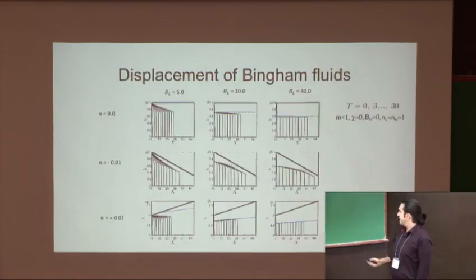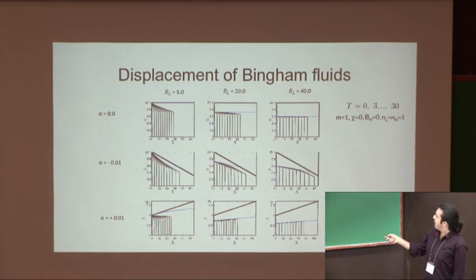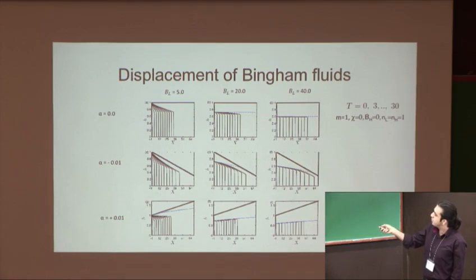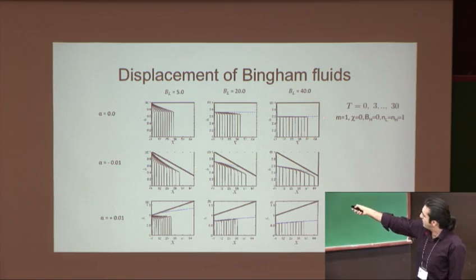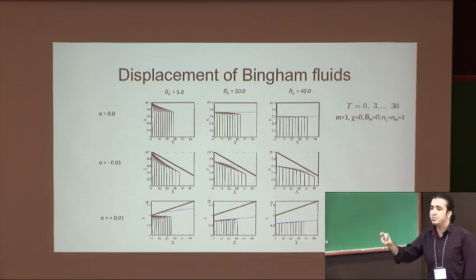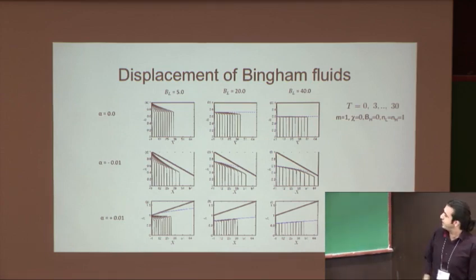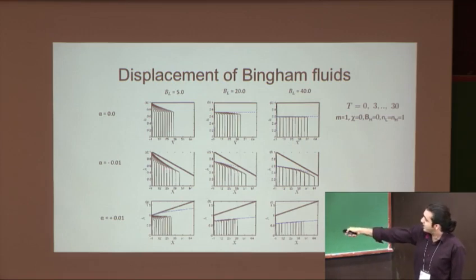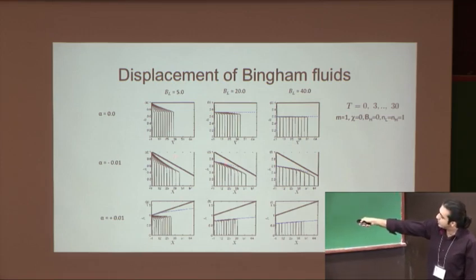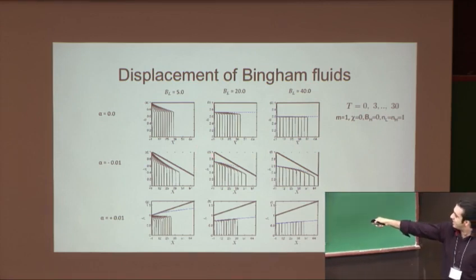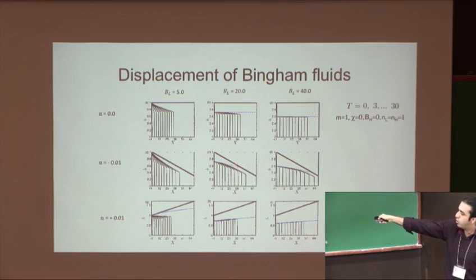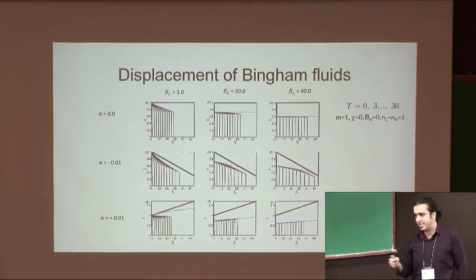So going to the Bingham case, what we can see is that for a given parameter set in a uniform channel, by increasing Bingham number, you can go to a static residual layer at the wall, for which we have developed—following Allouche and Frigaard back in 2001—we have developed a model for the maximal static residual layer, which basically gives us good predictions of the static wall layer. In the converging channel case, it's interesting to see that you can start with a relatively thick static layer, and as the model shows, at some point, due to the shear, the static layer disappears. And this is always—for any given Bingham number, you have a distance at which the static layer disappears.